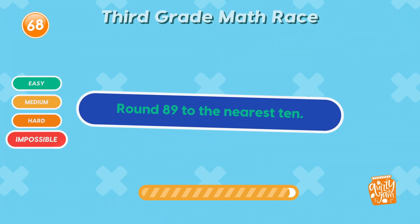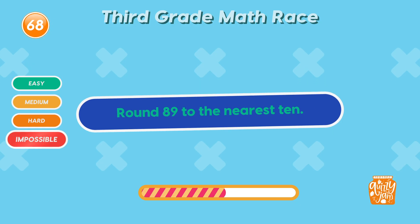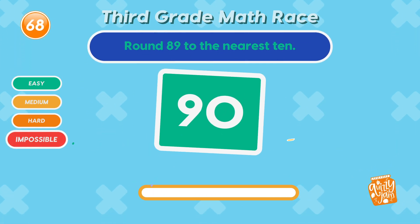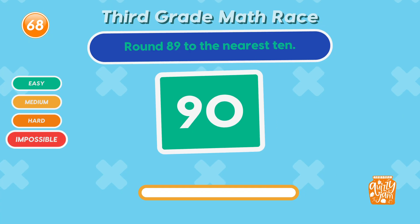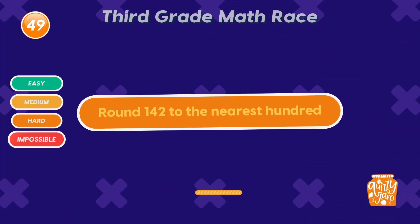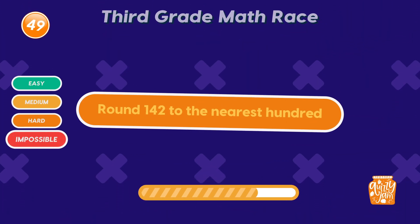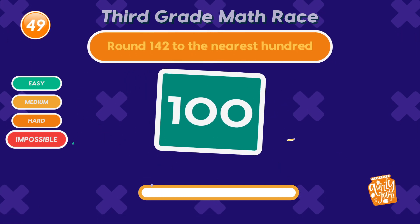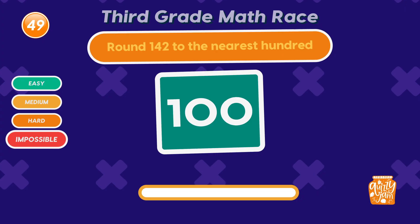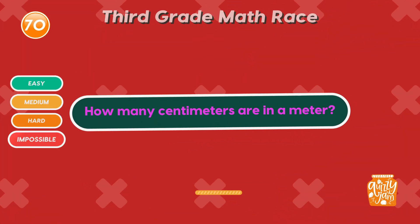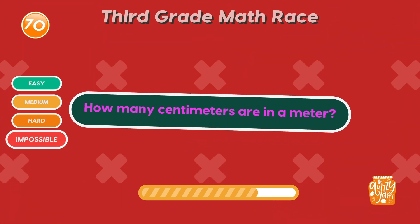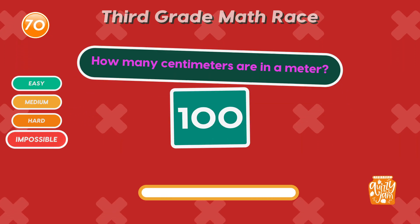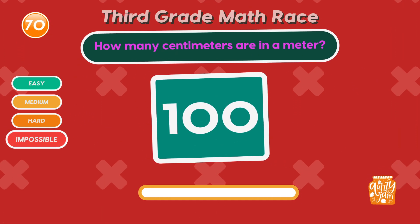Round 89 to the nearest ten. 90! Smooth move! Round 142 to the nearest hundred. 100! Nice job rounding down! How many centimeters are in a meter? 100! Metric system mastered!